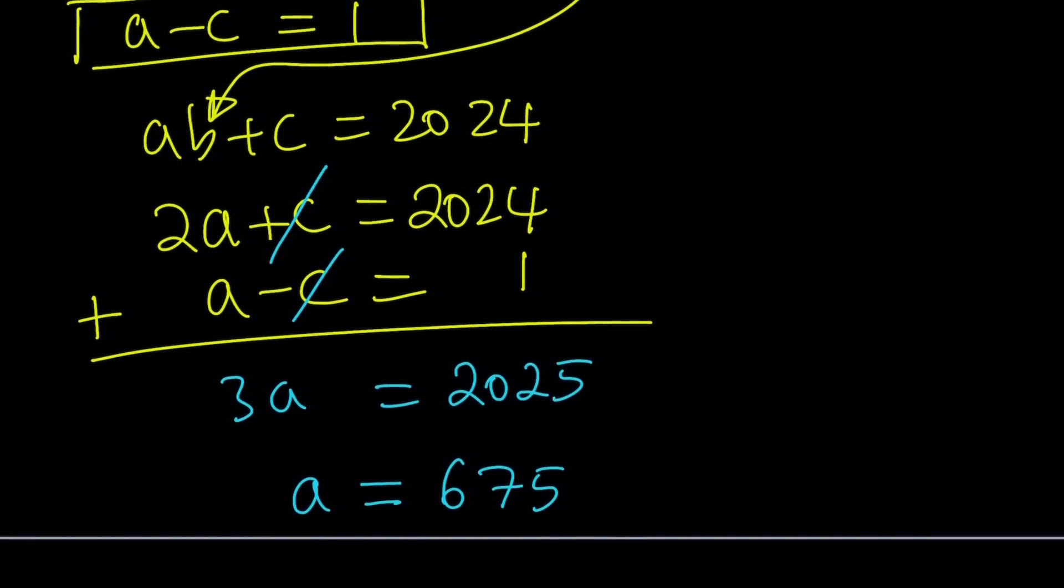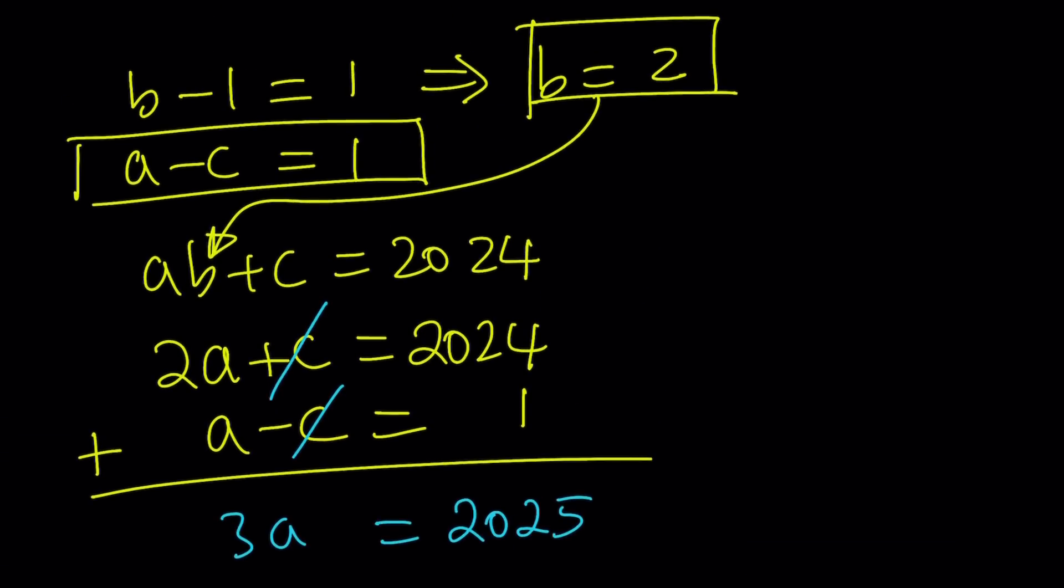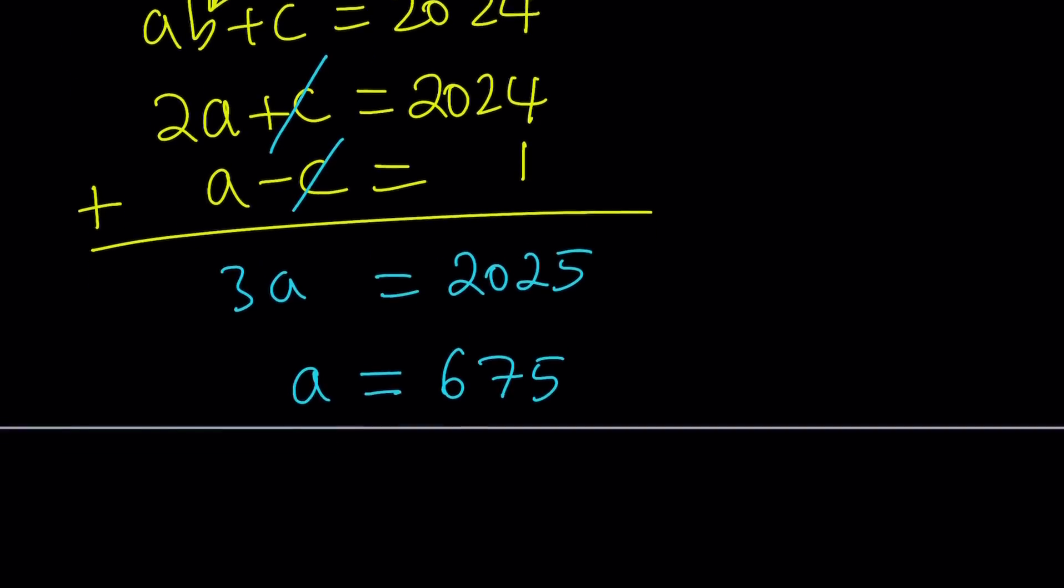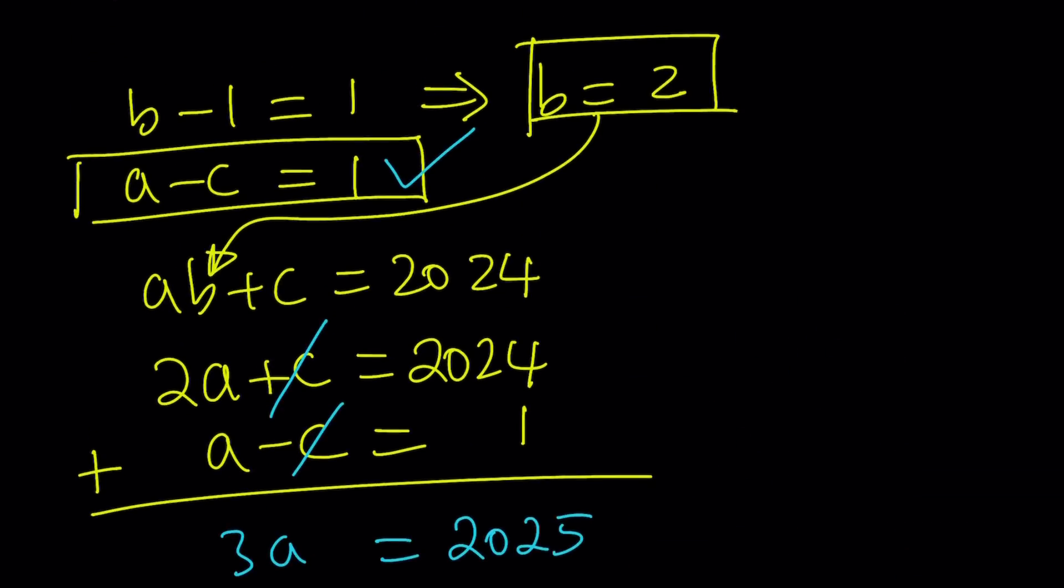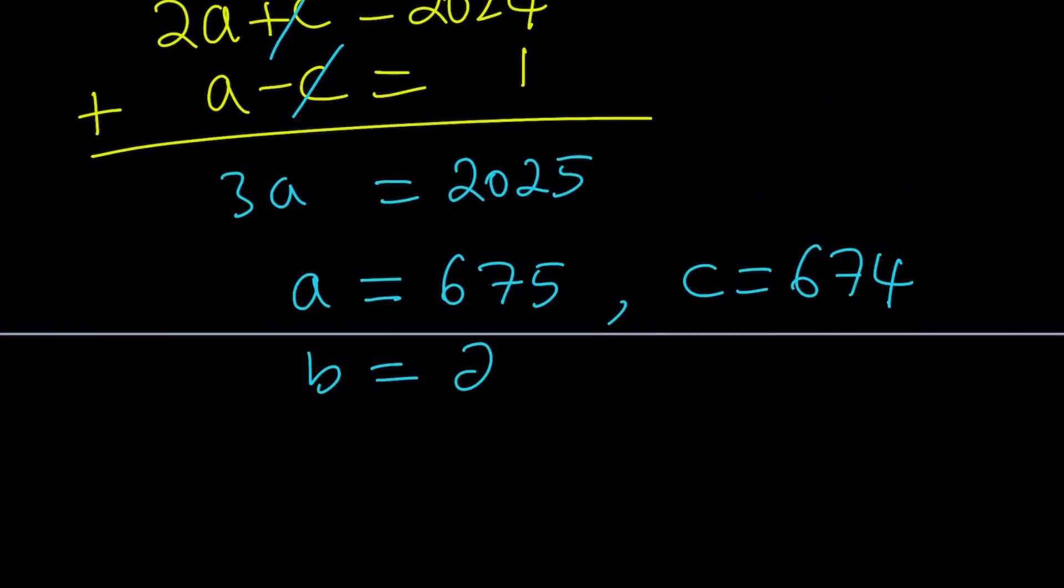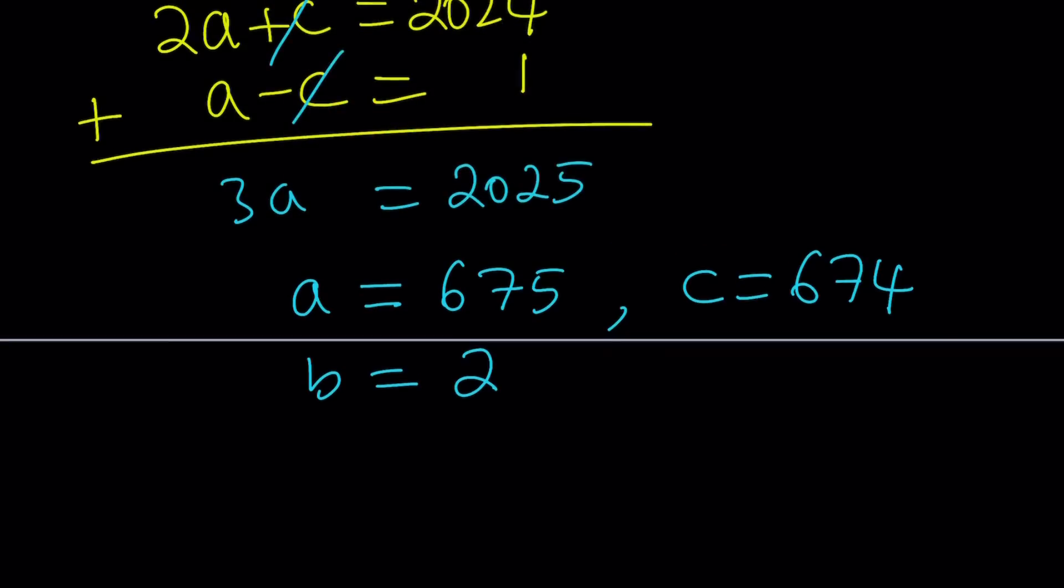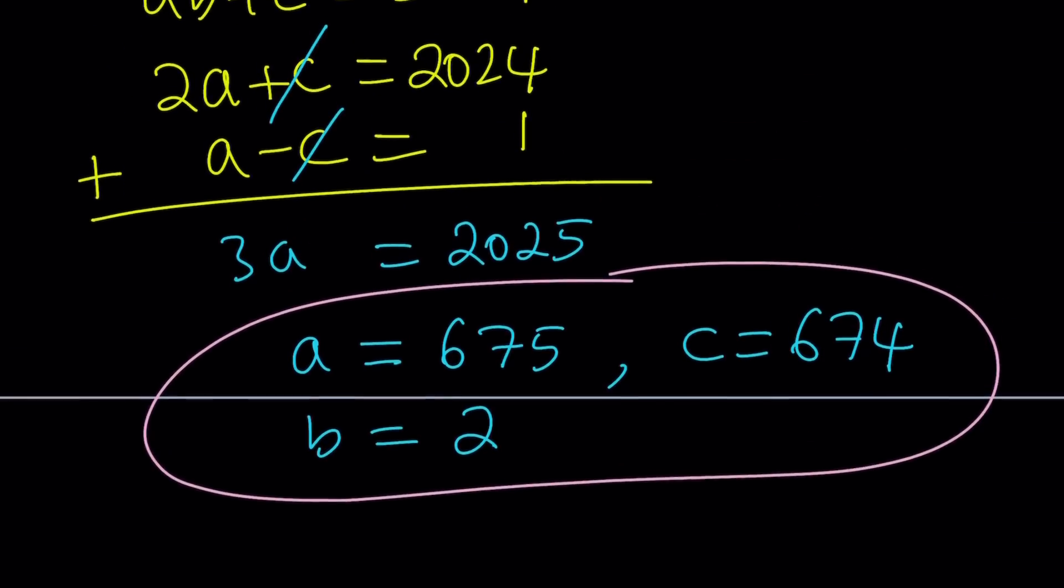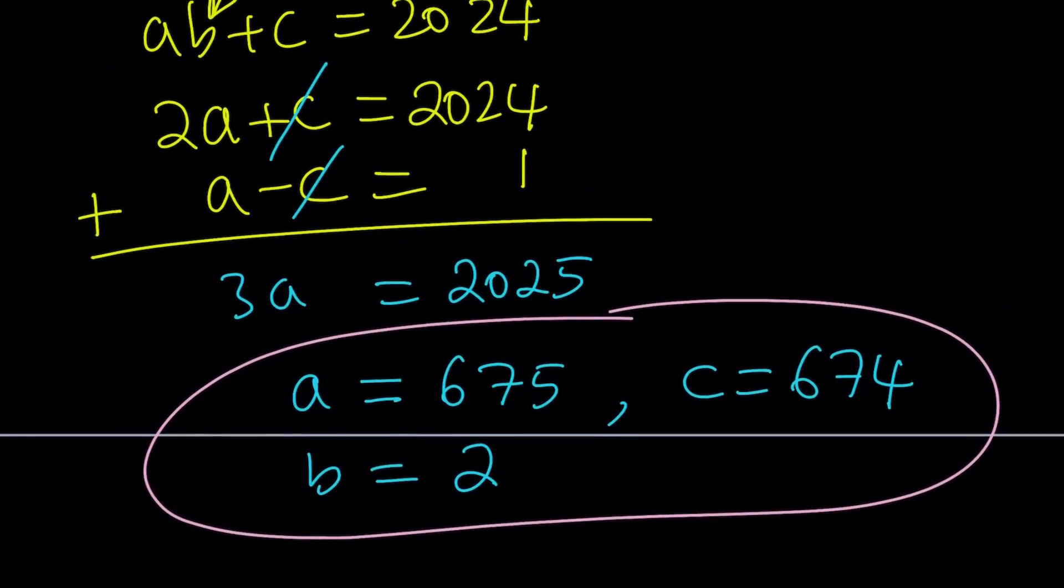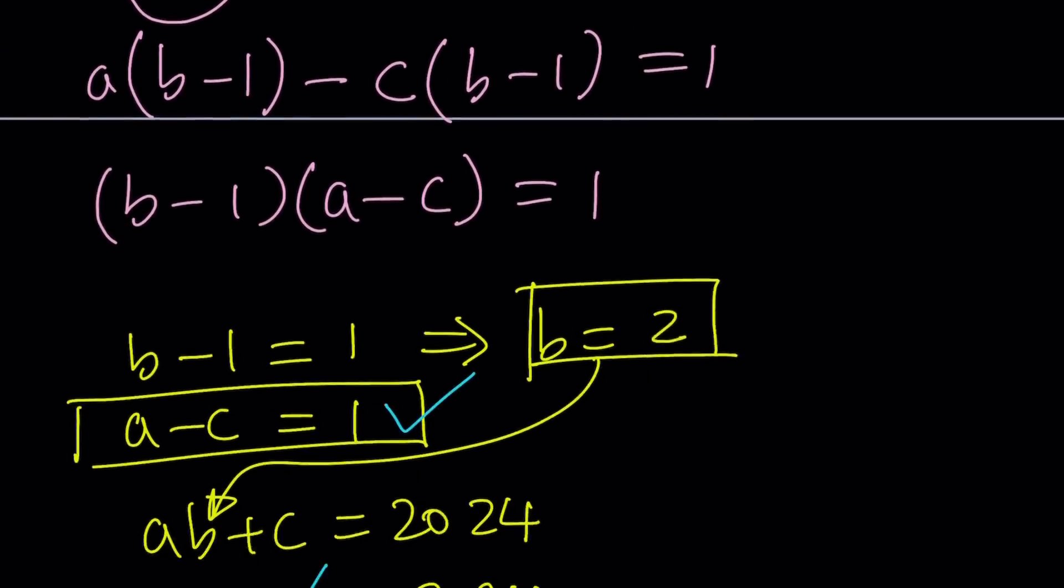But how do you find the other one from here? Well, if A is 675, we know that A minus C is 1. So, C is 1 less than A because their difference is 1. So, C is going to be 674. What was B again? B was 2. Let's go ahead and write that down here as well. That gives us our first ordered triple. 675, 2, 674.